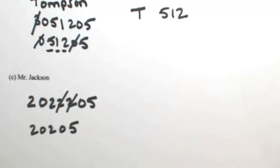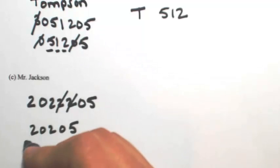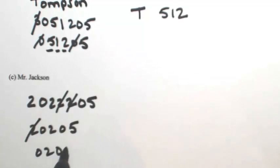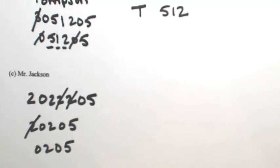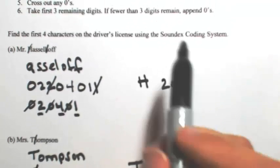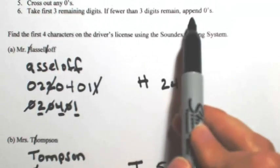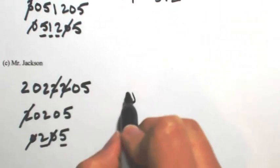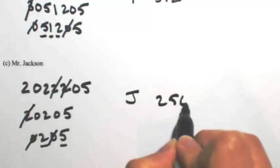So then we cross out the first digit unless it was an H or a W. It was a J, so we're going to cross it out. And then cross out any zeros. So notice that we're only left with two digits this time. So the last thing that we do if that happens, if you have fewer than three digits, you're going to append zeros. So I need one more digit. So it's going to be J, two, five, zero.